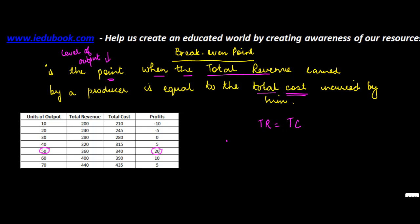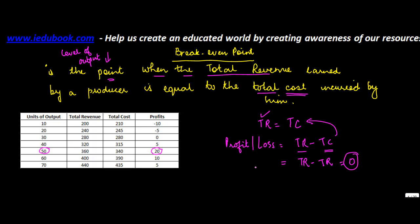Since total revenue is equal to total cost, what will be the profit or loss? Profit or loss equals TR minus TC, that is total revenue minus total cost. But since total cost equals total revenue, this becomes total revenue minus total revenue, which equals 0. So break-even point is the point when profit or loss is equal to 0, or total revenue is equal to total cost.